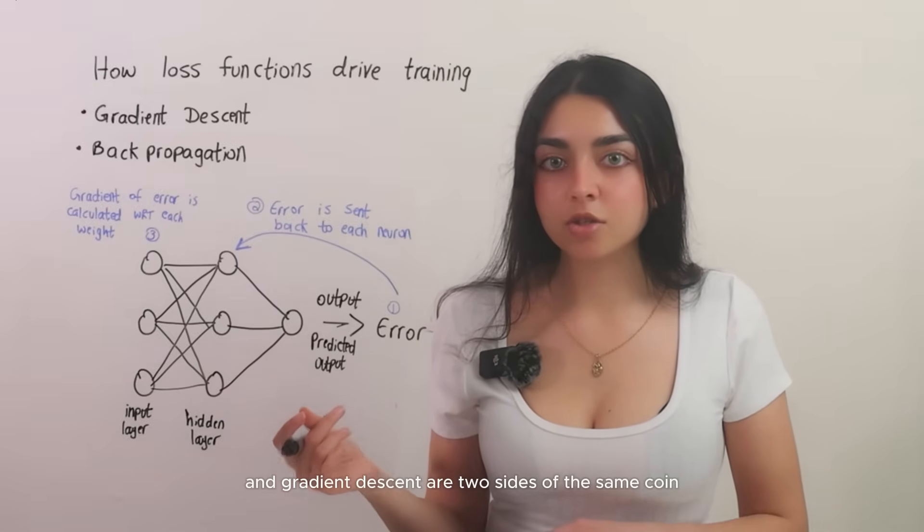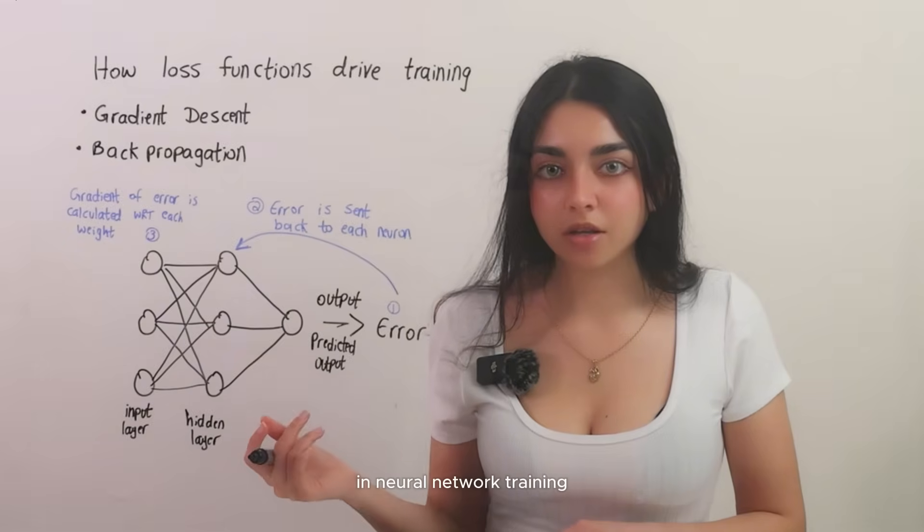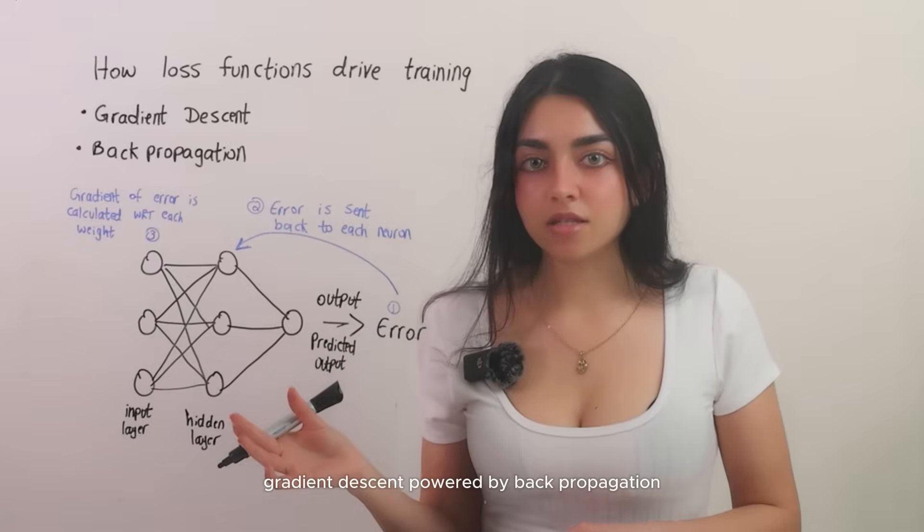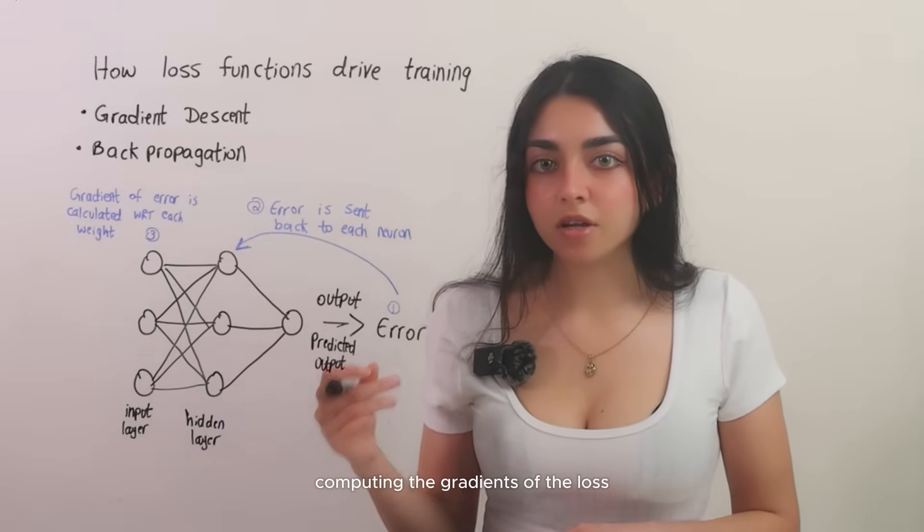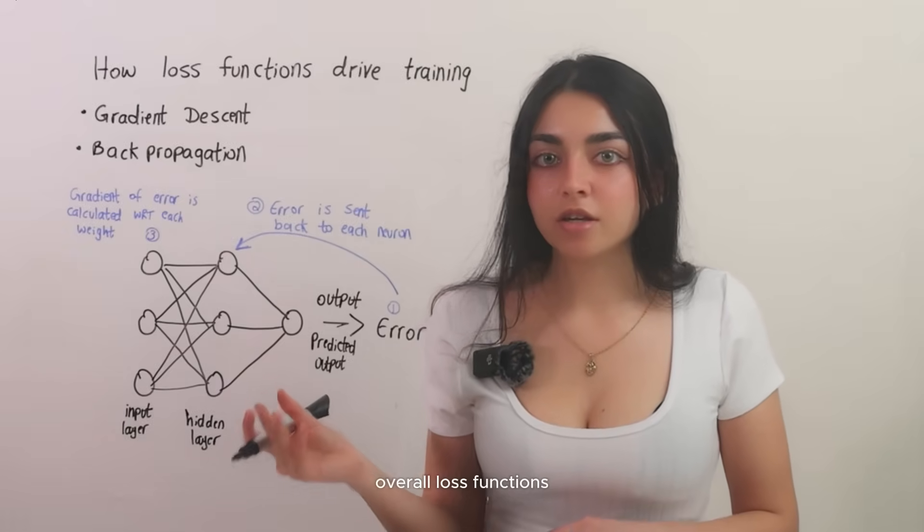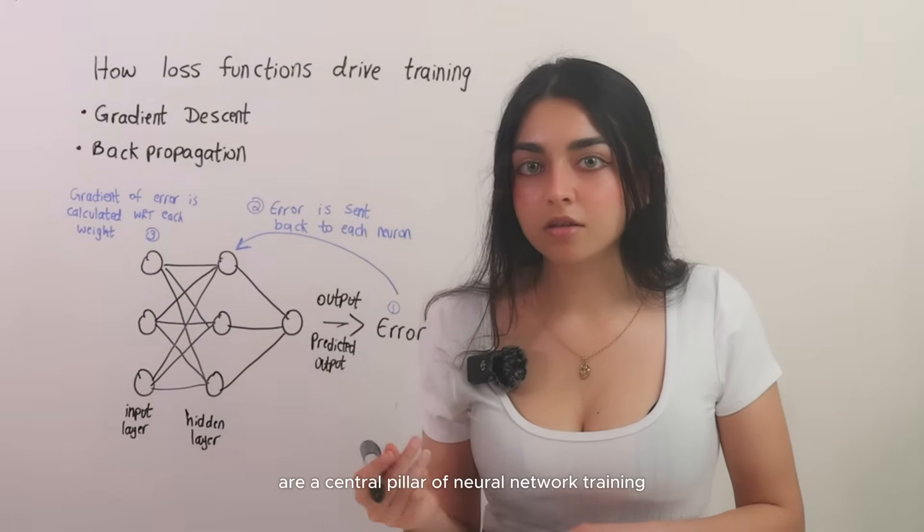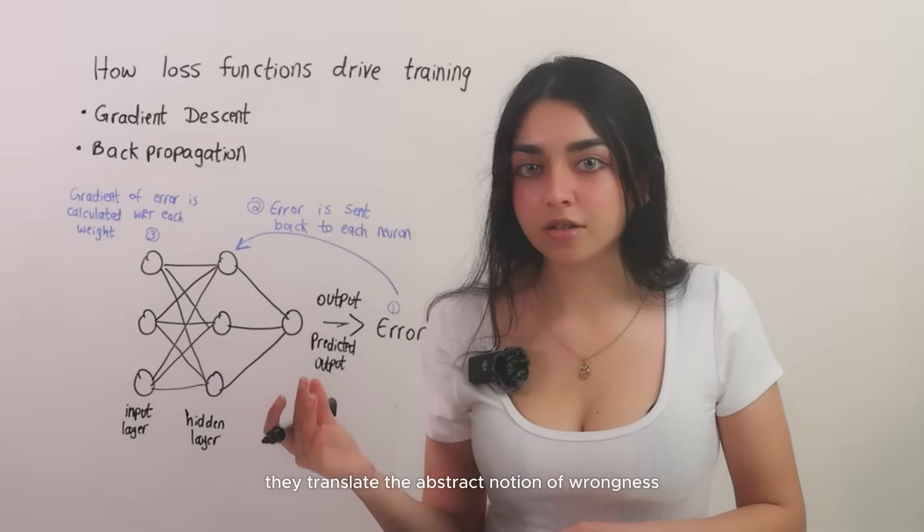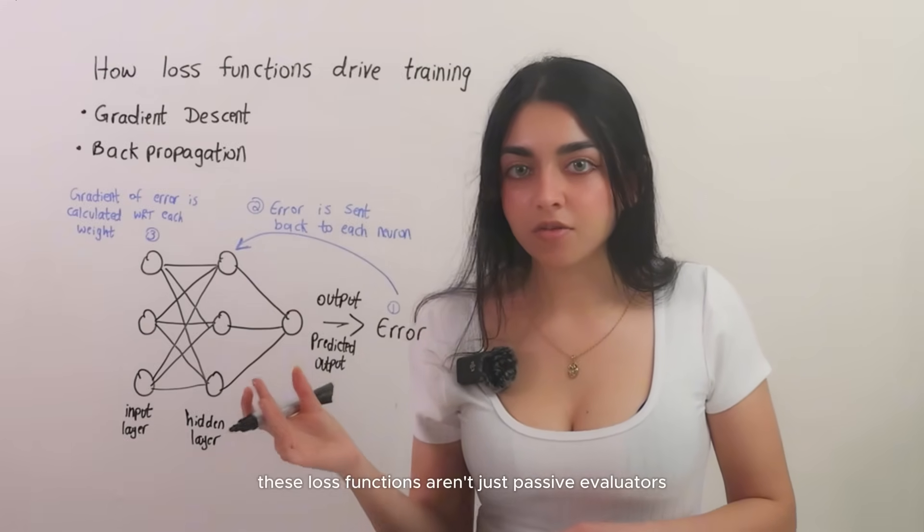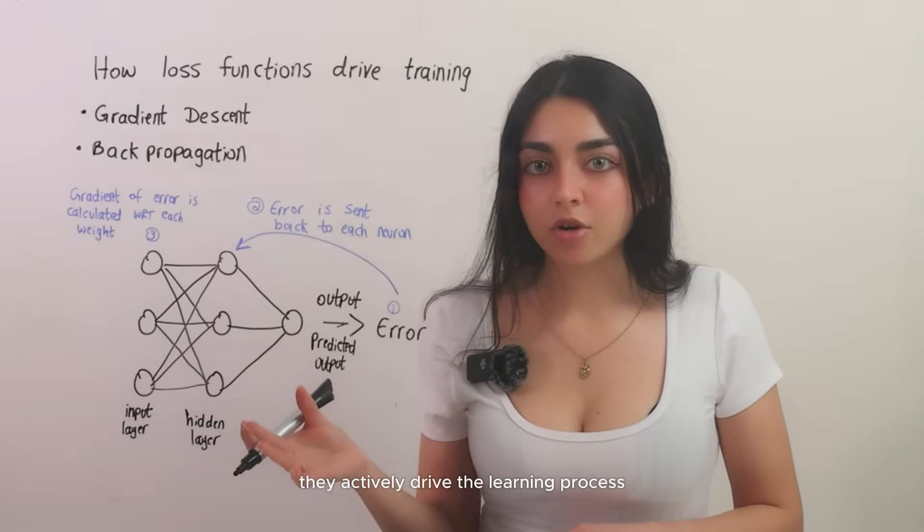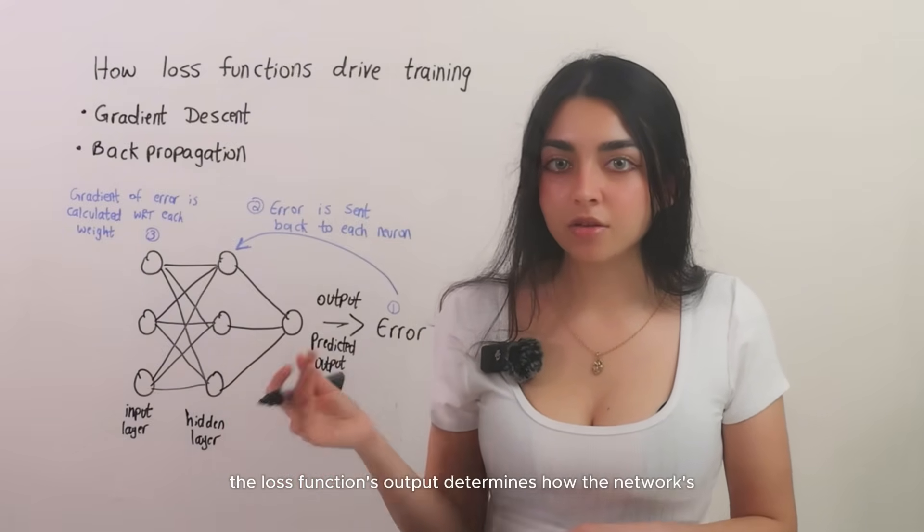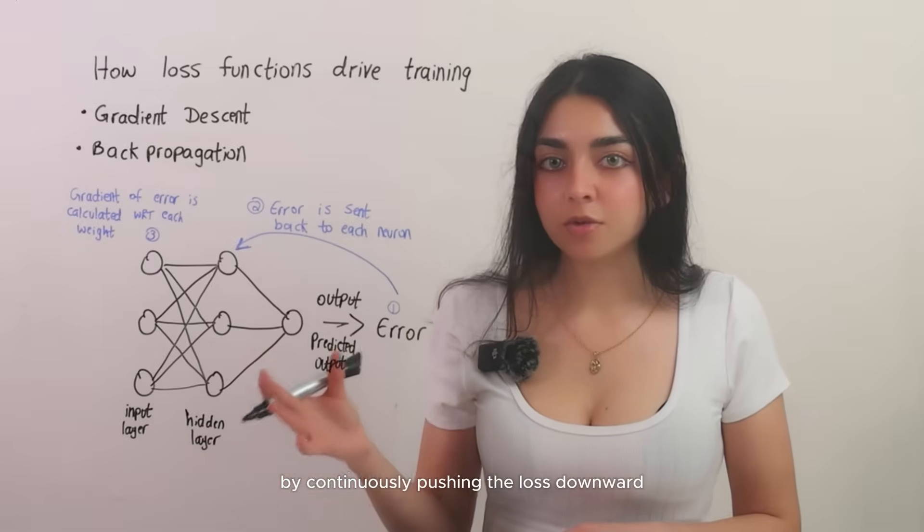So to tie this all together, loss functions and gradient descent are two sides of the same coin in neural network training. The loss function defines the objective. It's the thing we want to minimize. Gradient descent powered by backpropagation computing the gradients of the loss is the method we use to do the minimizing. Overall, loss functions are a central pillar of neural network training. They translate the abstract notion of wrongness and error into concrete mathematical form. These loss functions aren't just passive evaluators. They actively drive the learning process. Through gradient descent and backpropagation, the loss function's output determines how the network's weights are updated. By continuously pushing the loss downward, the network becomes better at its task.